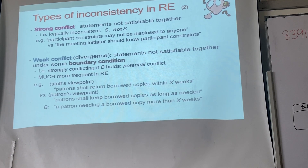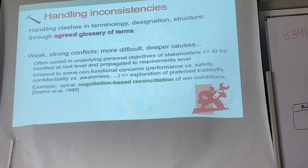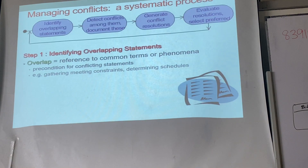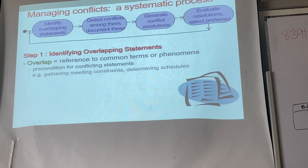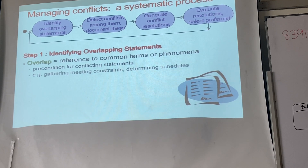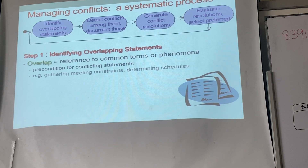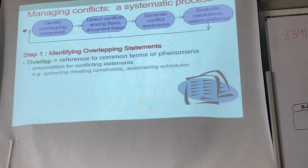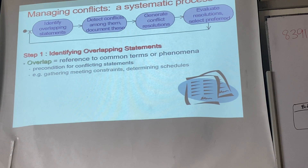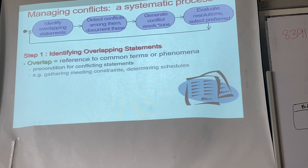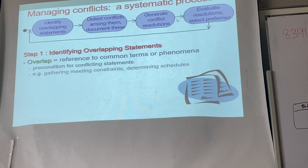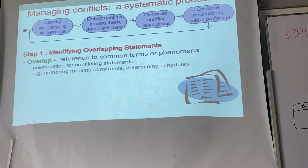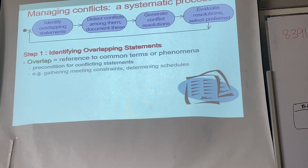Here's an example: participant constraints may not be disclosed to anyone — then the other says the meeting initiator should know the participant constraints. Totally opposite — that is a strong conflict. For the four steps to resolve conflict: first, identify the overlapping statement; second, detail the conflict among them; third, generate the conflict resolution; fourth, evaluate which option is best. When you generate resolutions, you can have more than one, so you choose the best to implement.